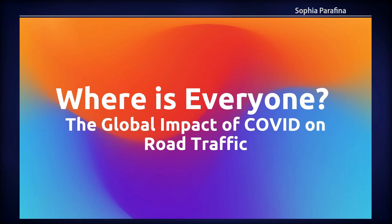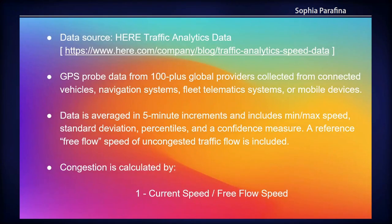So what we did was look at the global impact of COVID and overall road traffic. Where the data came from: HEAR traffic analytics. I wrote a blog post on how to get that, so if you're interested, that's the URL. The data itself came from GIS GPS probe data from 100 plus providers — at least several terabytes of data that I analyzed. The data is averaged over five-minute increments and provides standard deviation, free flow speed, and uncongested traffic flow.